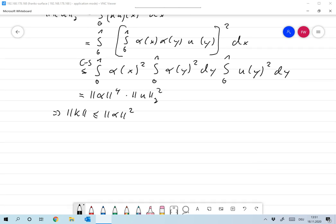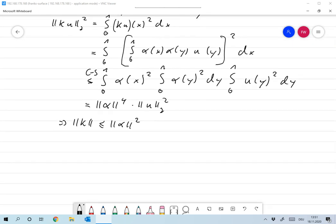And now we see that this is nothing but the L² norm of α to the 4 times the norm of u squared. Now, taking the square root and dividing by the norm of u, we find that the norm of K is less or equal to ||α||².